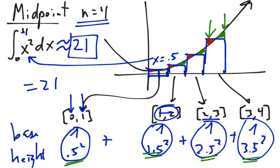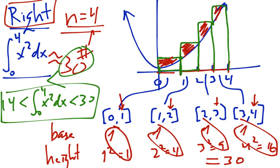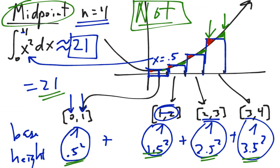On a test question, it probably won't ask you whether the midpoint is over or under-approximating. As an important note, the midpoint sum is not the average of the other two. For example, 21 is not the average of 14 and 30. In fact, the trapezoid sum is the average of the left and right, but the midpoint is not.